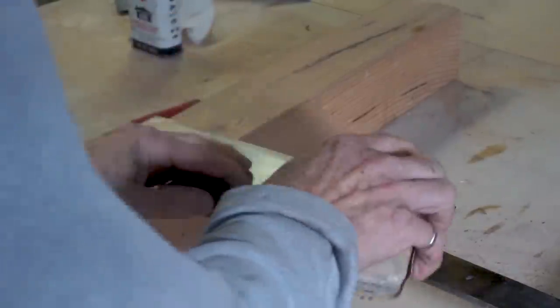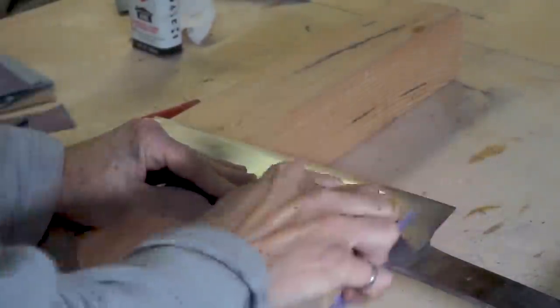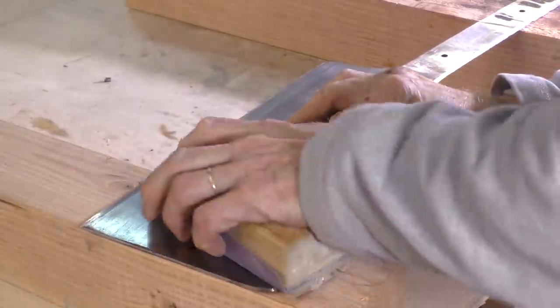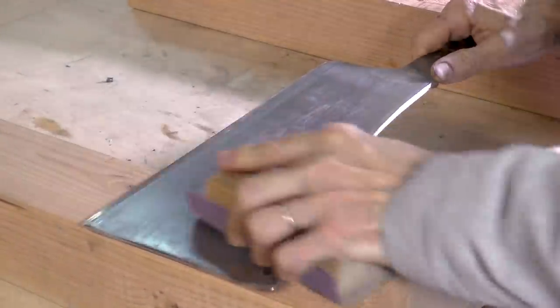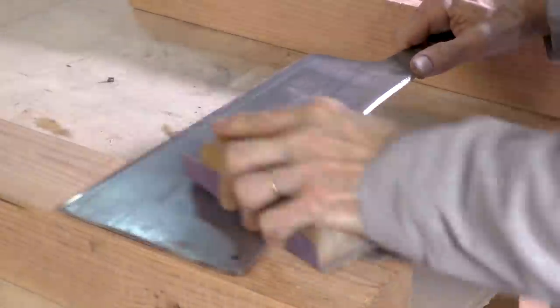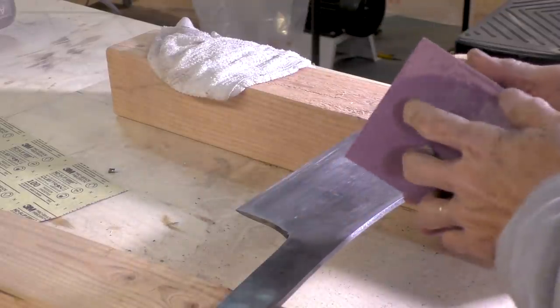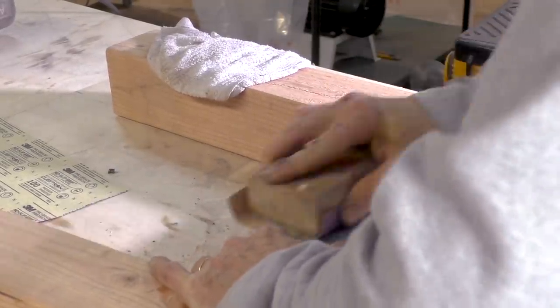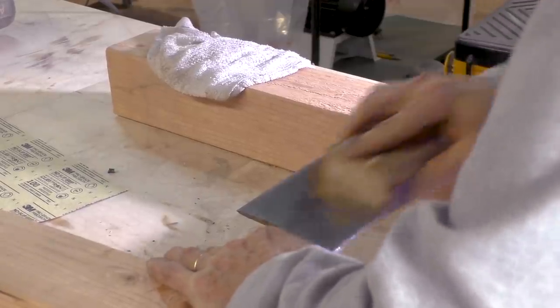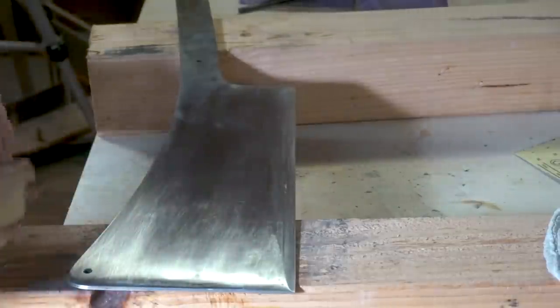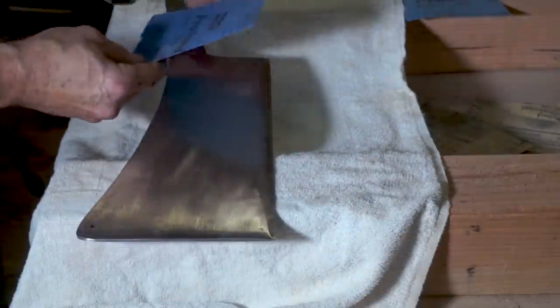After finishing up with the belt sander to get all the big scratches out, I moved over to hand sanding. I started with 150 grit and I worked my way up to 800 grit, and the purpose of each of those steps was to remove the scratches left behind from the previous grit. Starting at 320 grit I laid down a towel to reduce the chances of additional scratches being introduced.